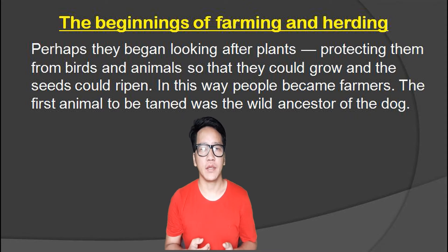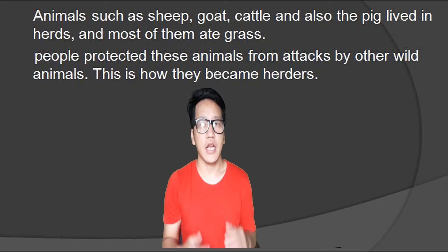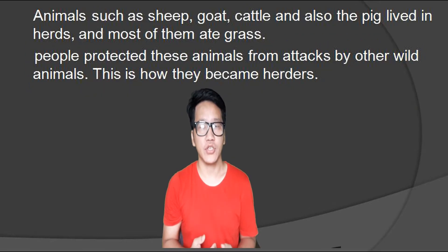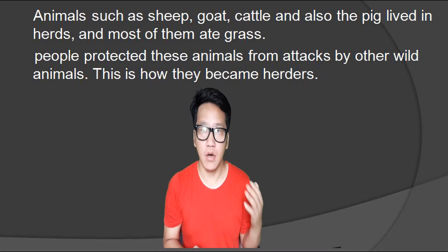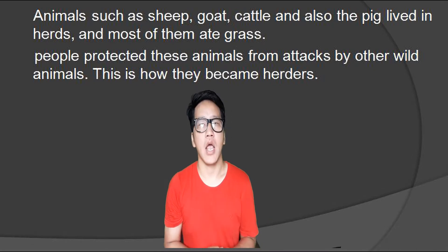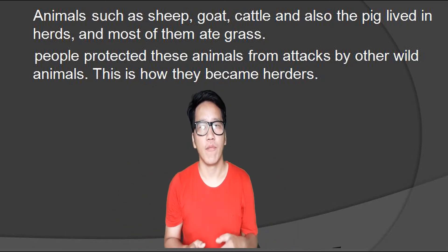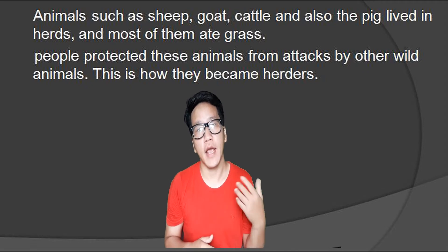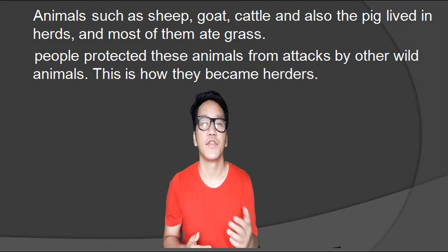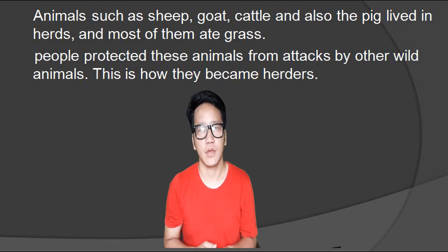The first animal to be tamed was the wild ancestor of the dog. Animals such as sheep, goats, cattle and also the pig lived in herds and most of them ate grass. People protected these animals from attacks by other wild animals. This is how they became herders.